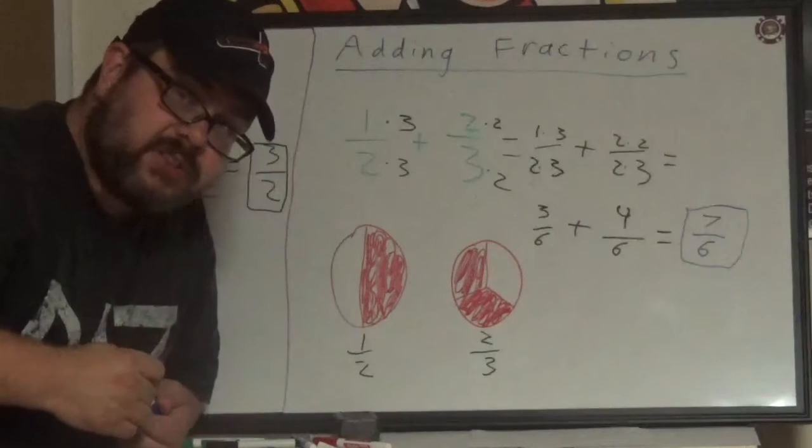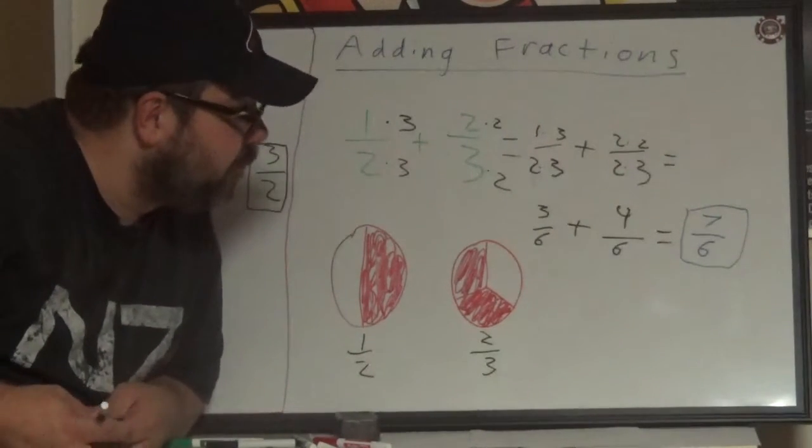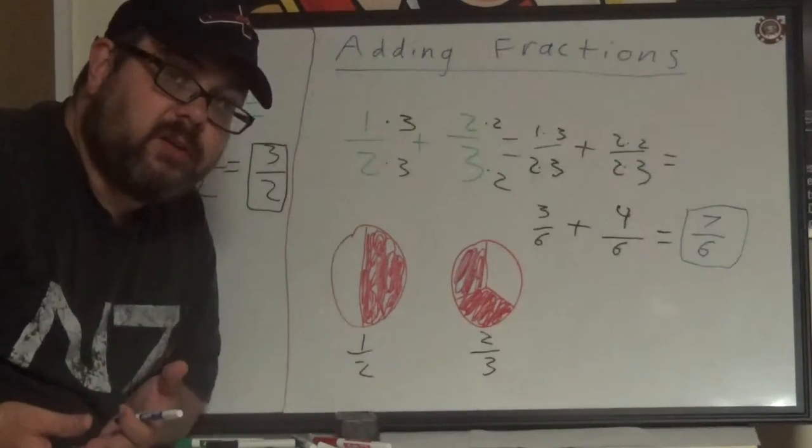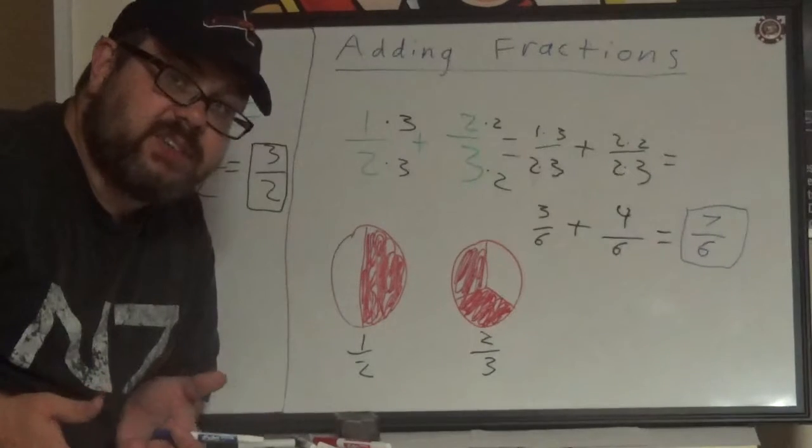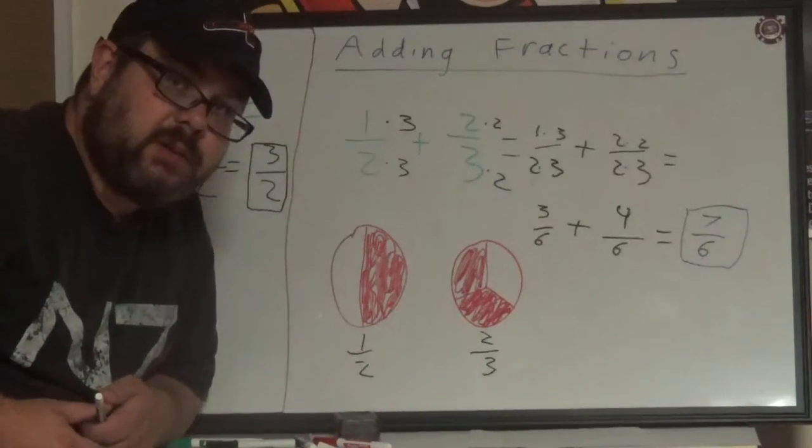And our final answer is seven-sixths, or seven over six, because now we have a denominator for each one that is the same, and therefore we can add. Thanks for watching, and have a nice day.